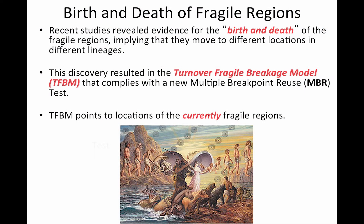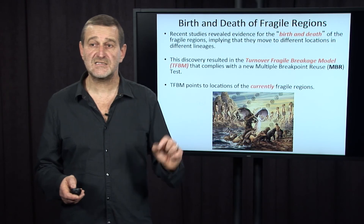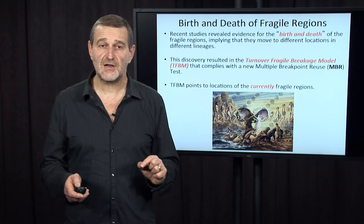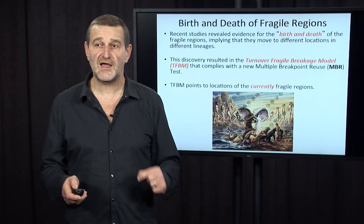Unfortunately, we don't have time to go into the details of the multiple breakpoint reuse test, but I can tell you what follows from studies that analyze this test. This recent study revealed evidence for birth and death of fragile regions, which means that fragile regions exist but they are not static — they move to different locations in human and mouse genomes. The positions of the fragile regions in the human genome are different from those in the mouse genome. This discovery resulted in the turnover-fragile breakage model, which allows for changes in the location of fragile regions.